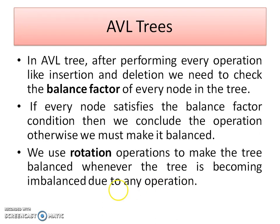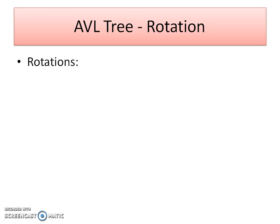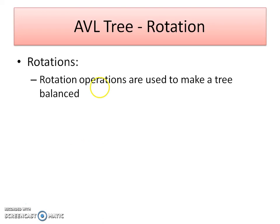In other words, if after performing insertion or deletion the tree is imbalanced — meaning a node is not following the condition for the balance factor, i.e., it is not minus 1, 0, or 1 — it indicates that the tree is imbalanced and therefore is not an AVL tree. To make it balanced, to make it an AVL tree, we need to perform some operation on the tree. That operation is nothing but the rotation operation. So let us start the rotation.